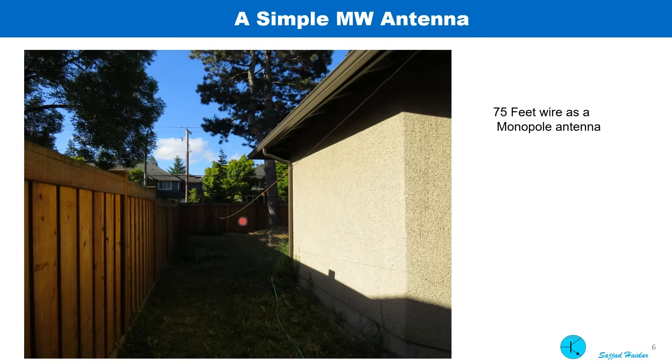I used a 75 foot long wire as an antenna, and this type of antenna is called a monopole antenna. The nearest medium wave station broadcast signal at 1 megahertz. And for better gain, the antenna length should have been 75 meter instead. And power line earth was used as a ground.